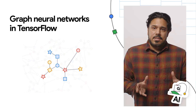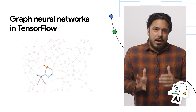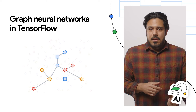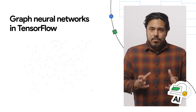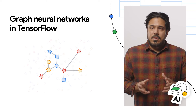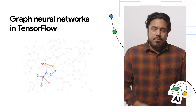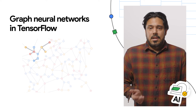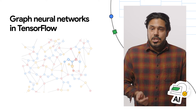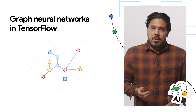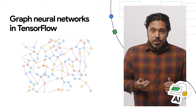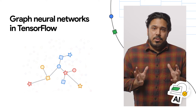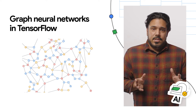Graph neural networks have emerged as a powerful technique to leverage both a graph's connectivity and the input features on the various nodes and edges composing the graph. This week, we are excited to announce the release of TensorFlow GNN 1.0, a production-tested library for building graph neural networks at large scales.